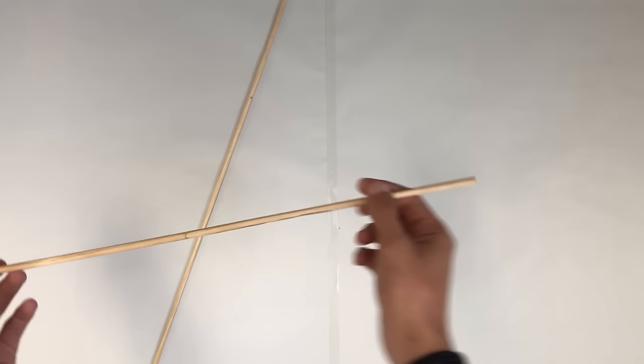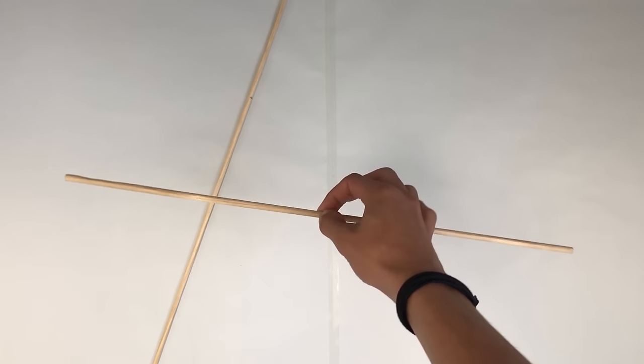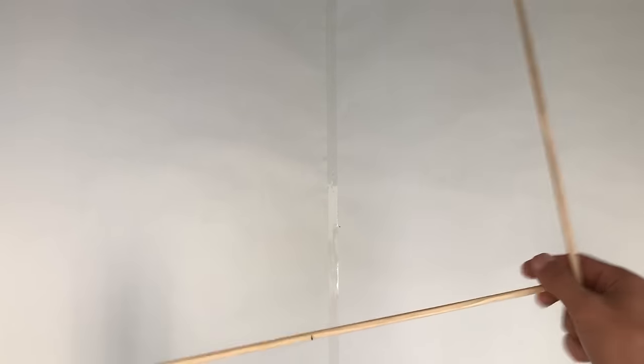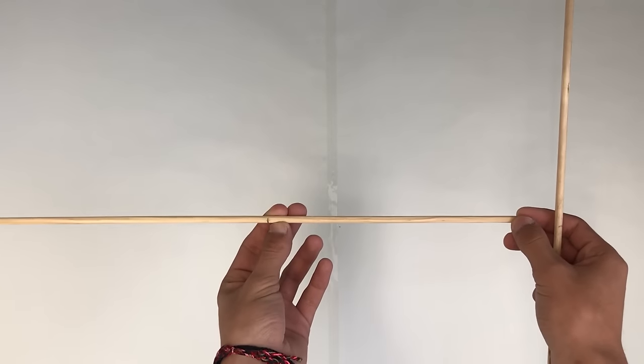First, you grab the 45 cm stick and make a mark right in the middle. And then you grab the 60 cm stick and make a mark at 20 cm from the edge.